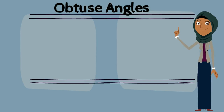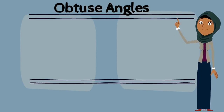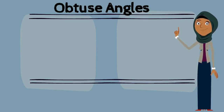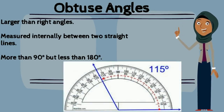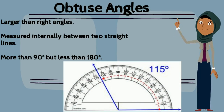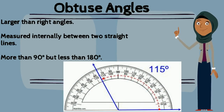The next type of angles are obtuse angles. They are actually larger than right angles. They are measured internally between the two straight lines and are more than 90 degrees but less than 180 degrees.